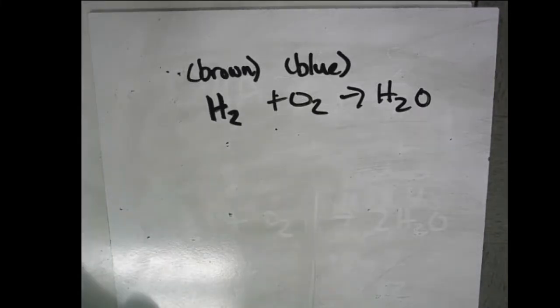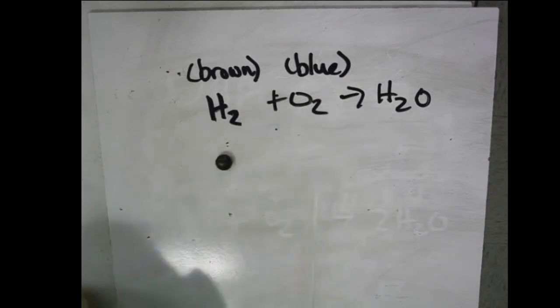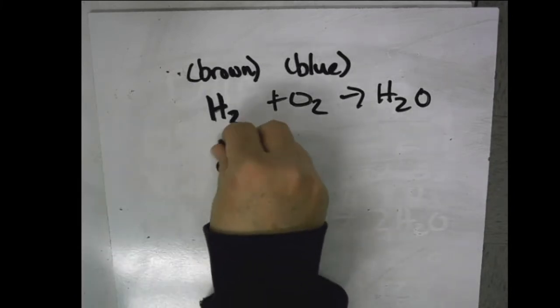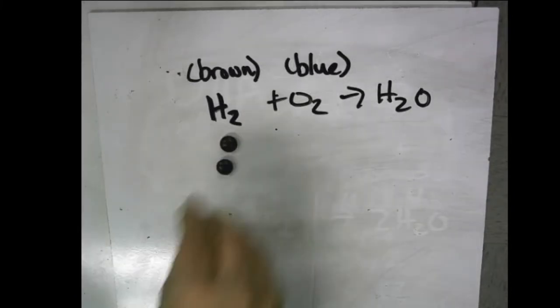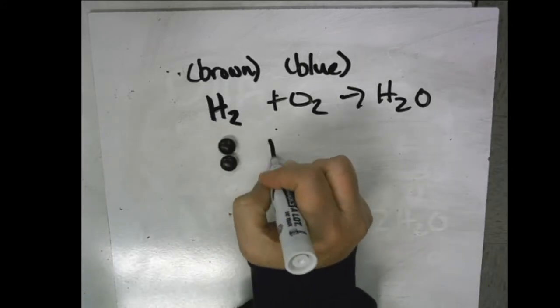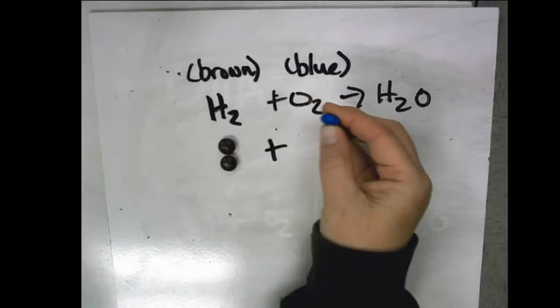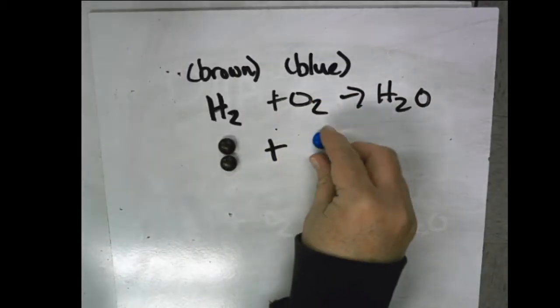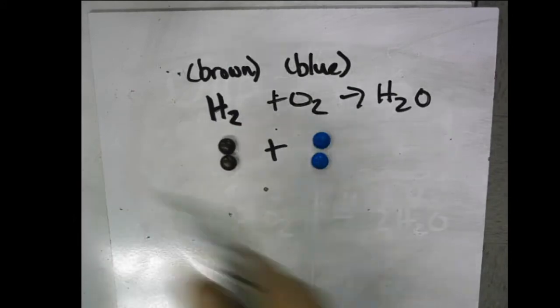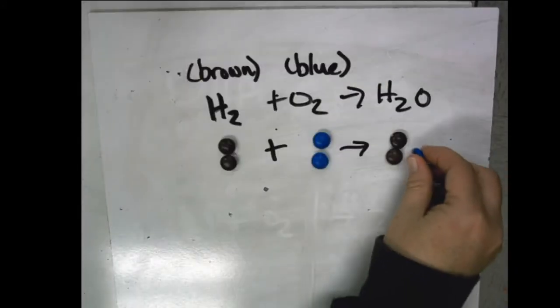So we're going to set up our M&Ms first. So we have two here, hydrogen, so I'm going to put two browns for hydrogen, and you can do this on a piece of paper just as I'm doing, or a whiteboard, or even a napkin, plus oxygen, which are blue, and it tells me that there's two, so I'm going to put two of those. Yields water, and in water we have two hydrogens, so two browns, plus one oxygen.